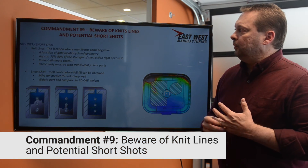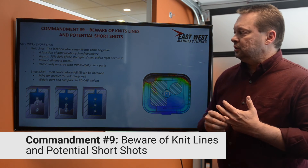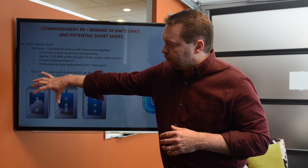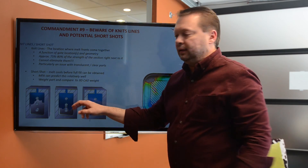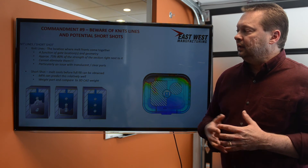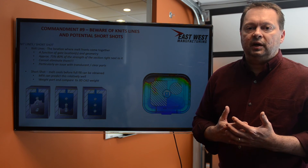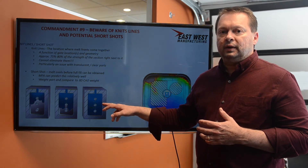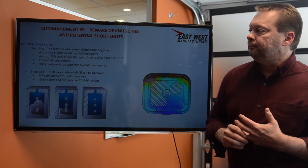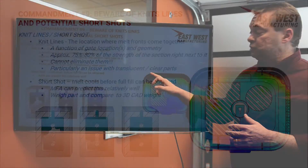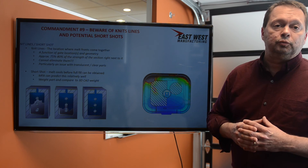Commandment nine is to beware of two molding anomalies: knit lines and short shots. Knit lines are areas where melt fronts have recombined — material flowing around a feature rejoins itself, and that area is only about three-quarters as strong as the adjacent section. Knit lines are essentially unavoidable, being a function of part geometry and gate location and quantity, but we can ensure knit lines are not located on high-stress areas of the part by choosing a different gate location. A short shot is an area where the mold simply can't fill — the material has been pushed as far as it can go, and a chunk is actually missing from the part. Both can be predicted with mold flow analysis.